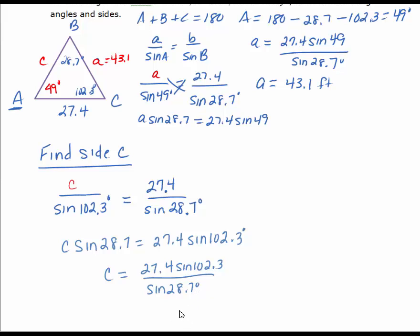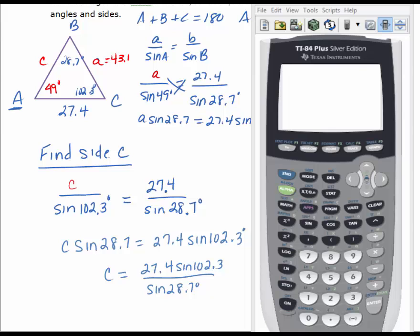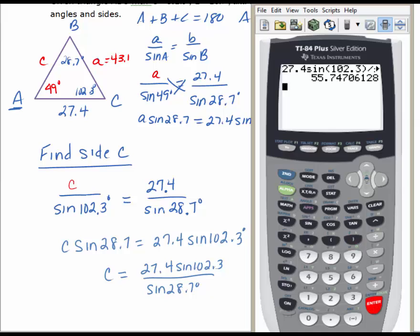We'll evaluate this in our calculator. Still in degree mode, we've got 27.4 times the sine of 102.3, close parenthesis, divided by the sine of 28.7. We're going to round sides to the nearest tenth, so we get approximately 55.7 for C.